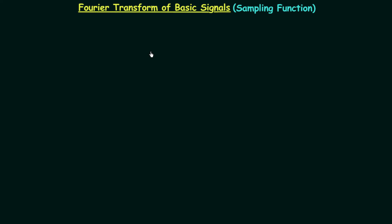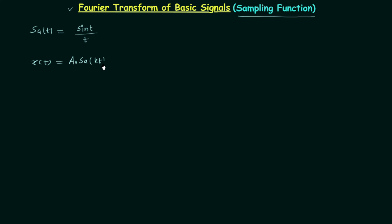In the last lecture we calculated the Fourier transform of the triangular function. In this lecture we will calculate the Fourier transform of the sampling function. We know sampling(t) equals sin(t) divided by t, but to calculate the Fourier transform we will consider the general case. Our time domain signal x(t) is equal to a0 times sampling(kt), and we are required to calculate the Fourier transform of this sampling function.